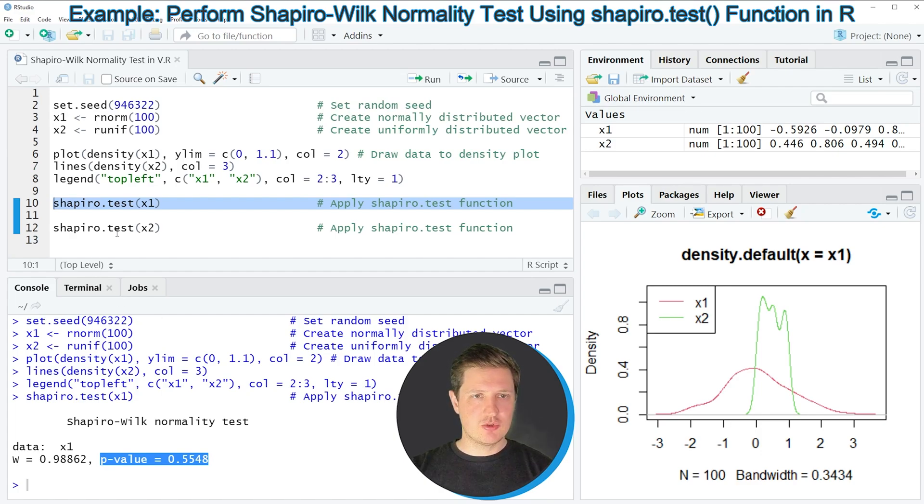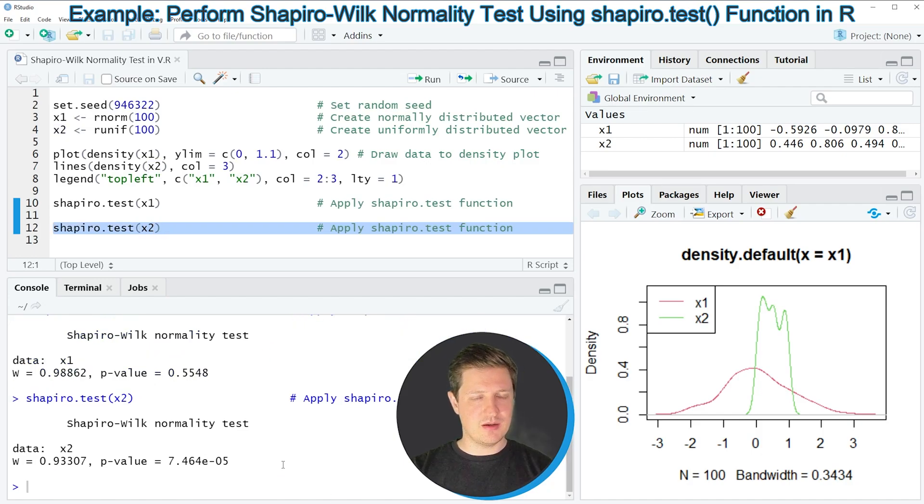However, let's apply the shapiro.test function to our second vector object as well, as you can see in line 12 of the code. All I'm changing here is the input vector to which I'm applying the shapiro.test function. If you run line 12 of the code you can see that another output is created at the bottom in the RStudio console.